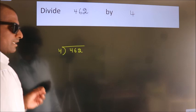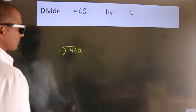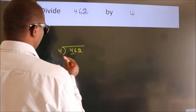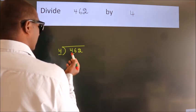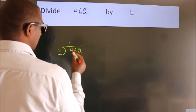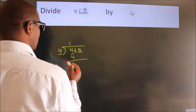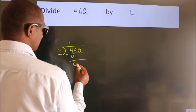This is your step 1. Next, here we have 4, here 4. When do we get 4? In the 4 table, 4 once is 4. Now we should subtract. We get 0.